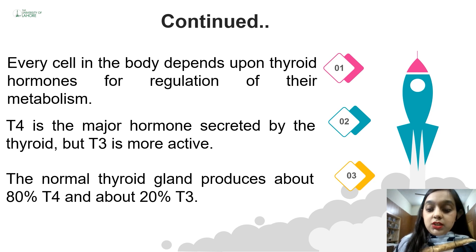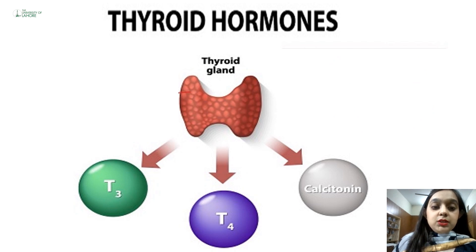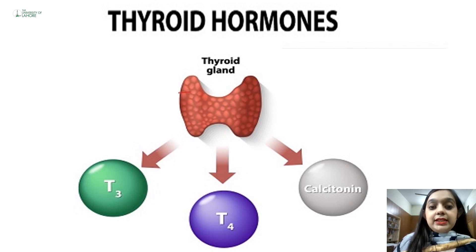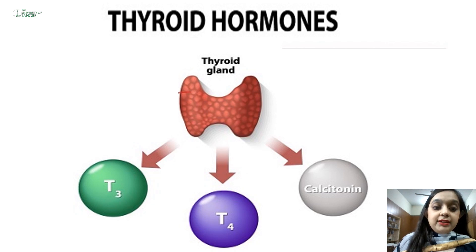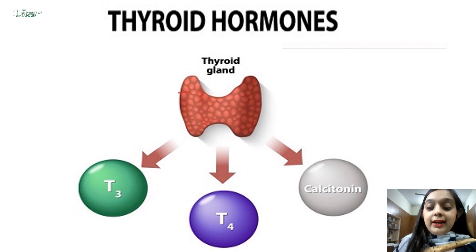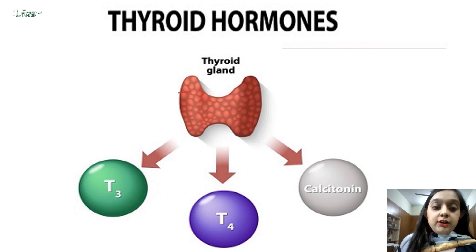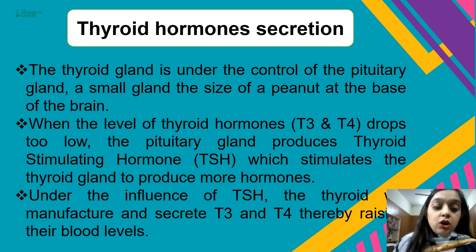Between the interstitial spaces of the follicles, there is another type of cell — the parafollicular cells, or C cells. These cells are responsible for the secretion of the peptide hormone calcitonin, which plays a crucial role in calcium metabolism. To summarize, the thyroid gland produces mainly three hormones: T3 and T4, the two major thyroid hormones, and calcitonin, which plays a role in calcium metabolism.